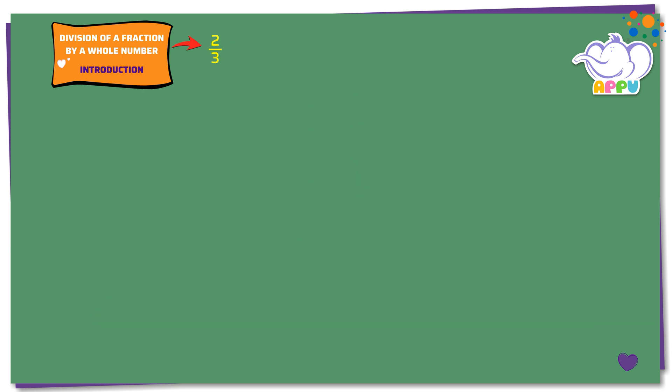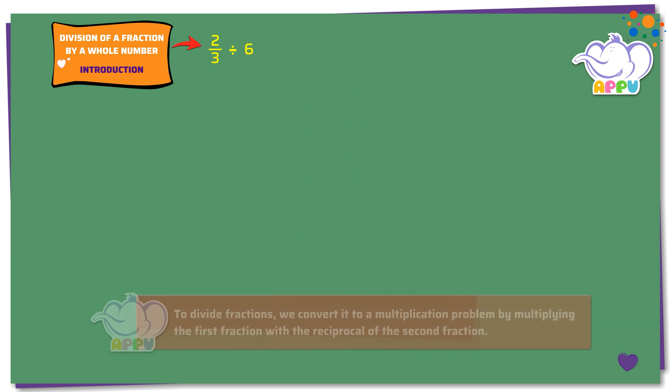Divide 2 by 3 by 6. We write this as 2 by 3 divided by 6 by 1.